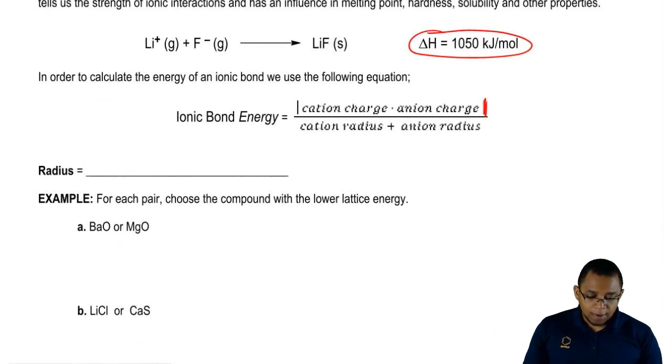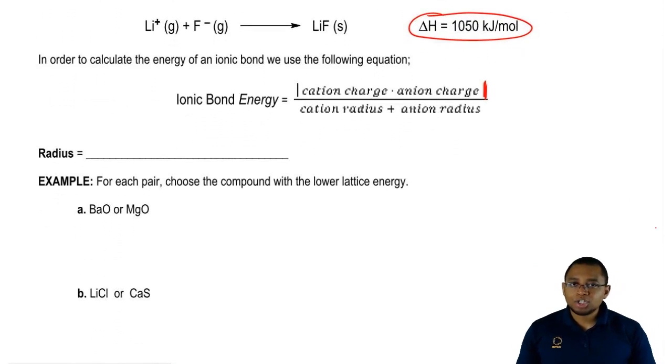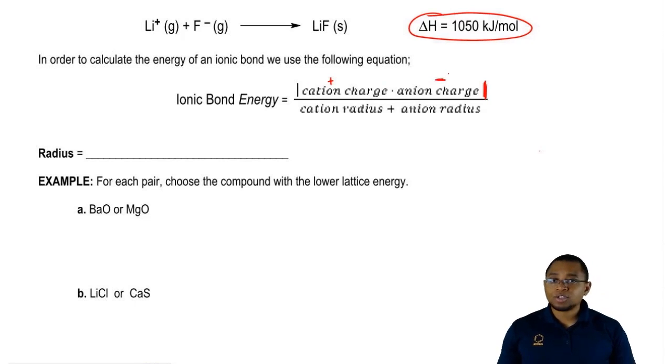The formula for lattice energy or ionic bond energy equals the cation charge times the anion charge in absolute brackets. Because it's absolute, we know the anion charge will be negative and the cation charge will be positive. A negative times a positive gives a negative answer, but because it's in absolute brackets, the answer overall will be positive. That's divided by the cation radius plus the anion radius.